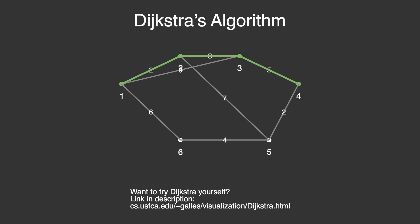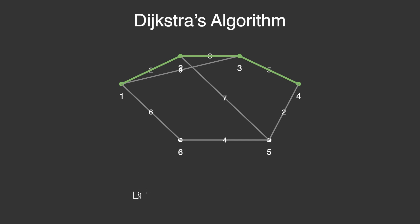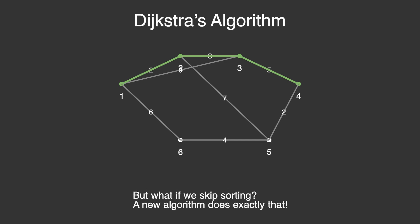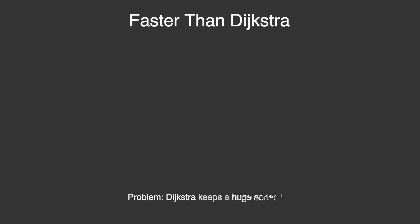So, is this the best we can do? Or can we make it even faster? Let's find out. Here's the problem with Dijkstra: it keeps one giant sorted list of all possible paths, and sorting this list is what makes it slow.